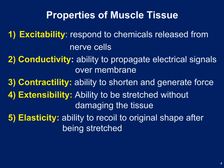The last property of muscle is that it has to be elastic. We have to be able to stretch it, contract it, and then it has to be able to snap back to its original shape without injury. So all five of these are properties of muscle tissue.